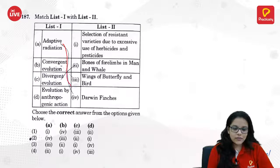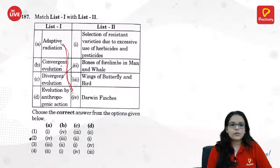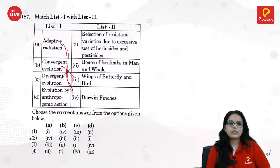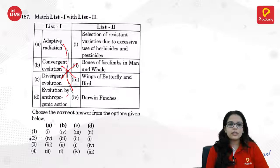Adaptive radiation is Darwin's finches — they spread out and adapted their beaks for different kinds of food. Convergent evolution is wings of butterfly and bird — both are wings but different structures for similar purposes. Divergent evolution is homologous structures like forelimbs in man and whale. Evolution of anthropogenic action is selection of resistant varieties due to excessive use of herbicides and pesticides. The answer is A4.